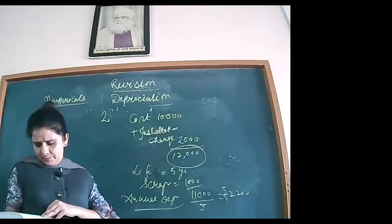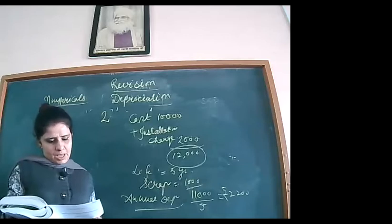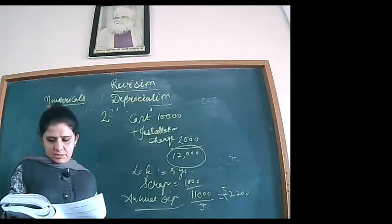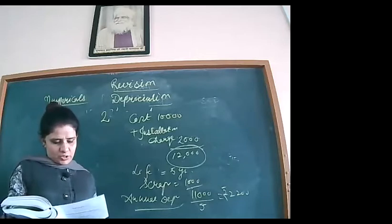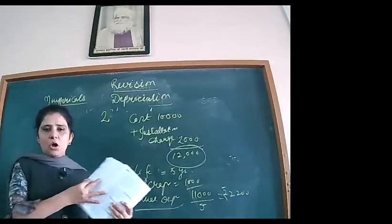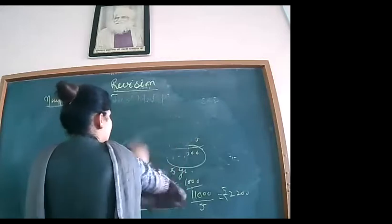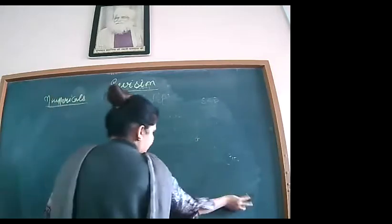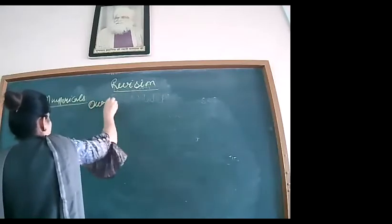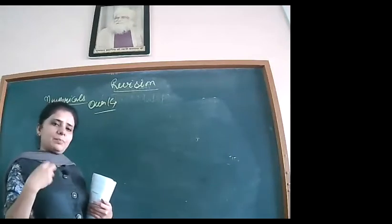Those earlier questions are quite easy. Now we are moving to profit or loss on sale — the comprehensive questions. We will start from question 14 from the back exercise. Other questions between them are simple and unlikely to appear. Come to question 14.